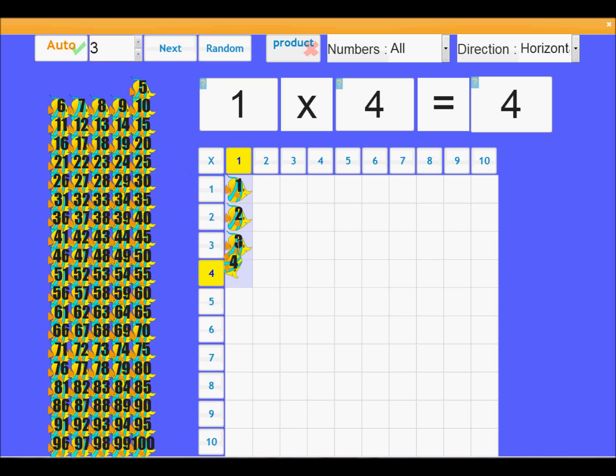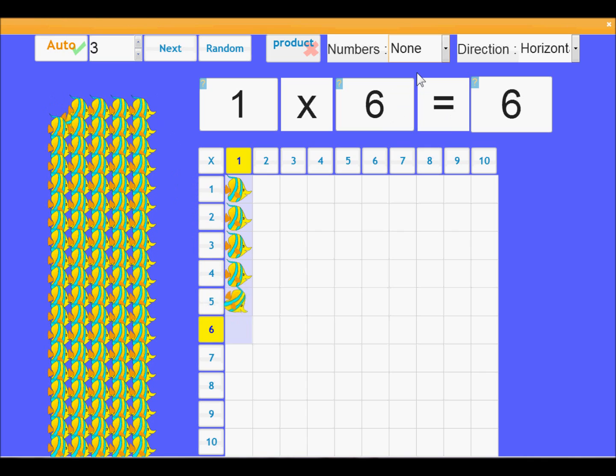So I'm going to speed things up. I'm going to look at some of these other controls. So the numbers. If I click none, all the numbers disappear. So this makes things a little bit harder. So now you have to actually go through the process of counting the fish.